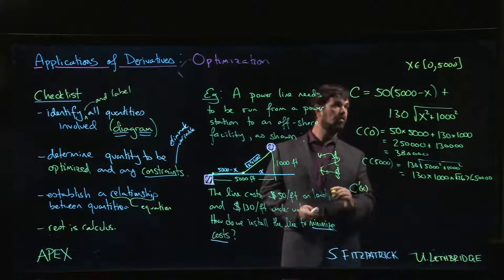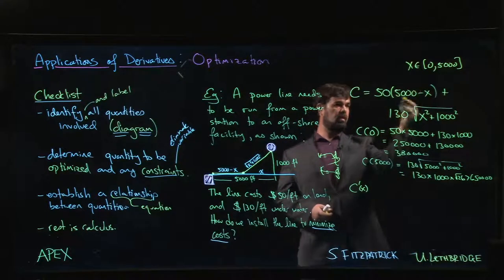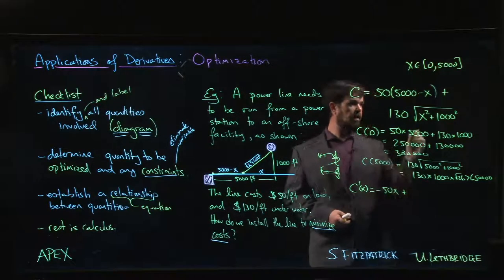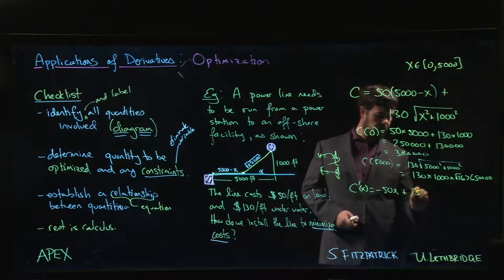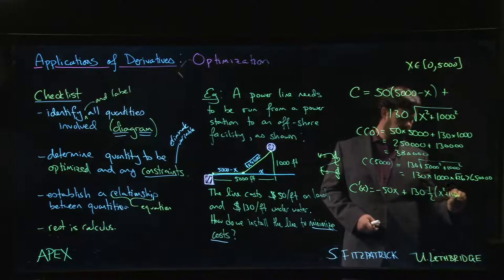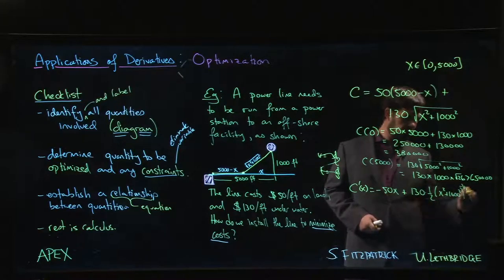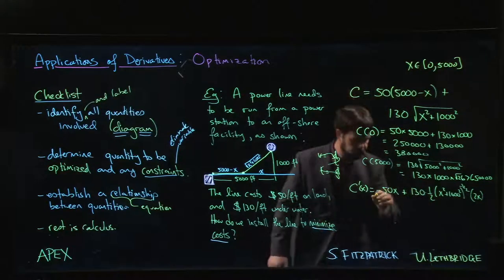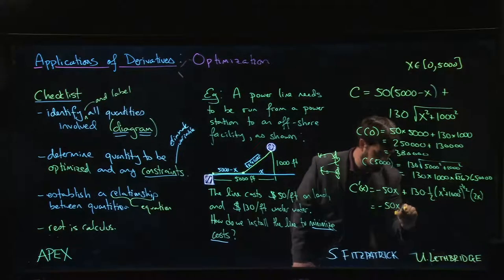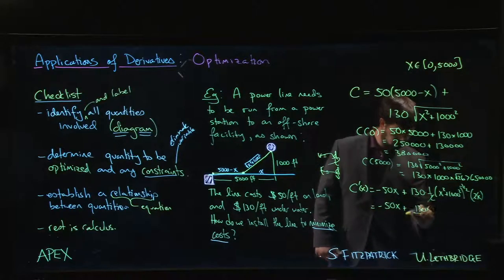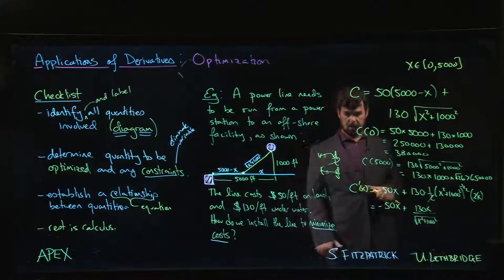The optimal solution must occur at a critical number. Taking the derivative C'(x): the derivative of −50x is −50, plus applying the chain rule to 130√(x² + 1000²) gives 130 × (1/2)(x² + 1000²)^(−1/2) × 2x. Simplifying, the 2's cancel, giving C'(x) = −50 + 130x / √(x² + 1000²).